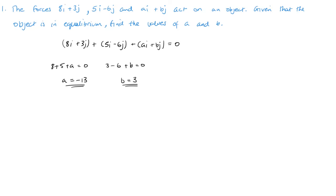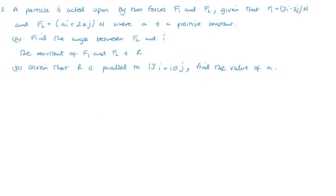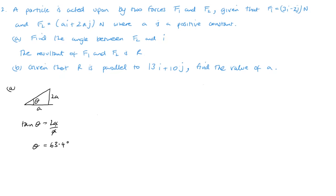For question two, part a: we want the angle F2 makes with i. F2 has a across and 2a up, so tan theta equals 2a over a — the a's cancel — giving tan theta equals 2. The inverse tan of 2 is 63.4 degrees.